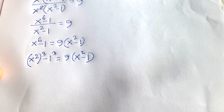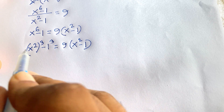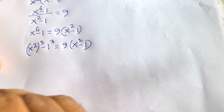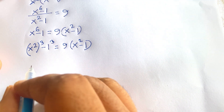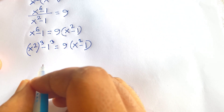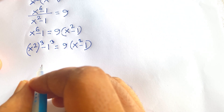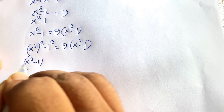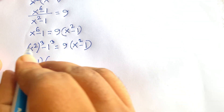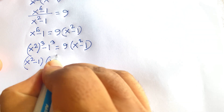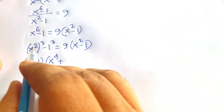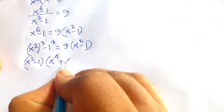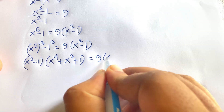Now I apply the difference of cubes formula: a^3 - b^3 = (a - b)(a^2 + ab + b^2). Here a = x^2 and b = 1, so (x^2)^3 - 1 = (x^2 - 1)(x^4 + x^2·1 + 1^2), which gives (x^2 - 1)(x^4 + x^2 + 1) = 9(x^2 - 1).